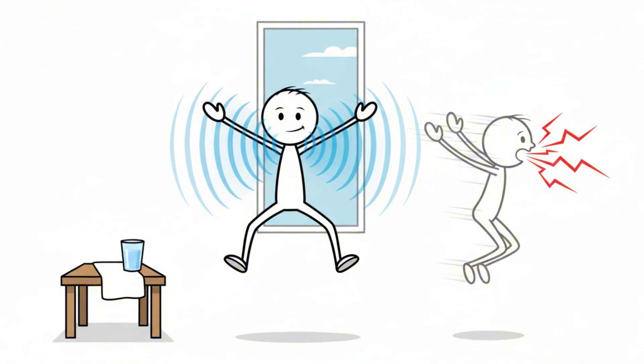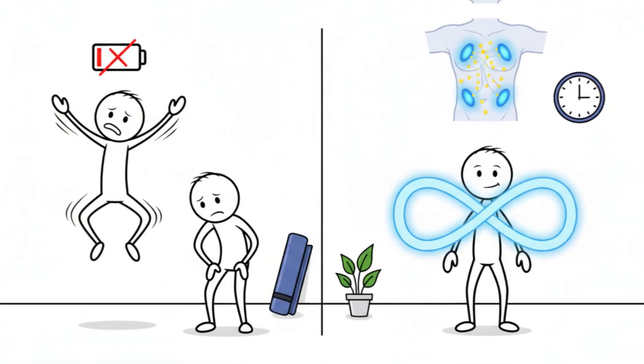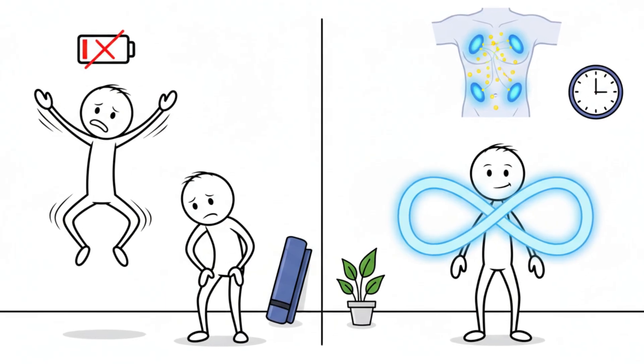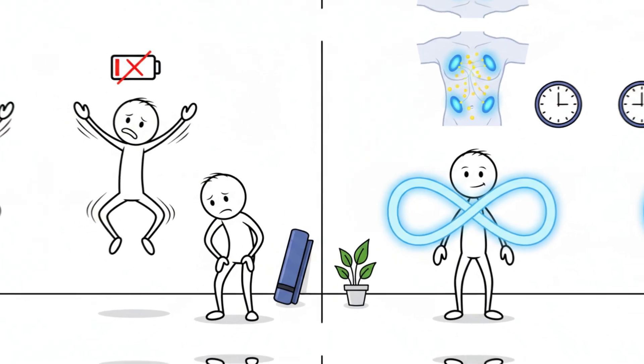If you start feeling breathless within the first few minutes, slow the tempo. Zone 2 isn't about power, it's about consistency. This controlled rhythm nudges your muscles to rely more on fat oxidation rather than glucose.